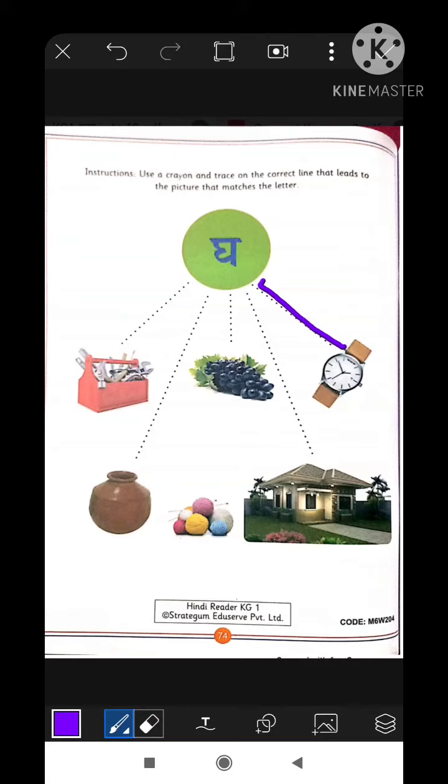Now the second picture is of a house. House ko Hindi mein kya bolta hai? Ghar. Yes. Now match them through the dotted line.